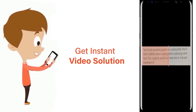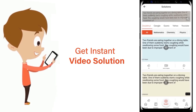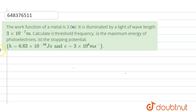The question says: the work function of a metal is 3 electron volt. It is illuminated by a light of wavelength 3×10⁻⁷ meter. Calculate the threshold frequency, the maximum energy of photoelectrons, and the stopping potential.